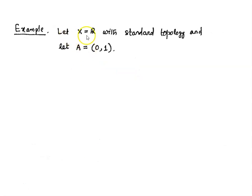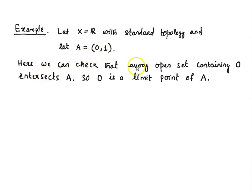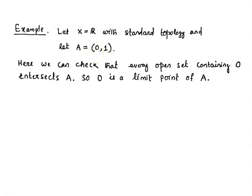For example, let X be the real line with standard topology and let A be the open interval (0,1). Here we can check that every open set containing 0 intersects A. Since we have standard topology on R, open sets are either open intervals or unions of open intervals. Open sets around 0 are open intervals containing 0, and any open interval containing 0 definitely intersects the set A. So 0 is a limit point of A.